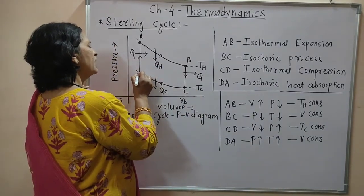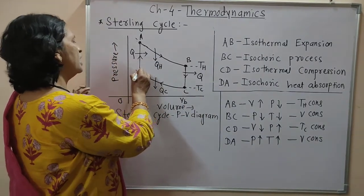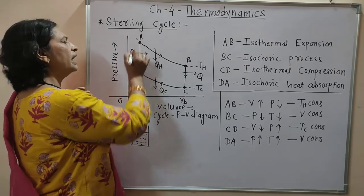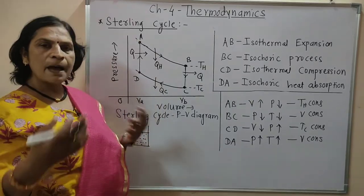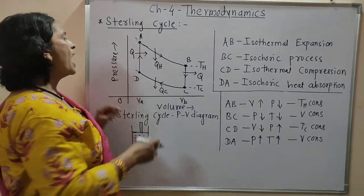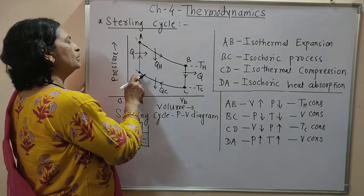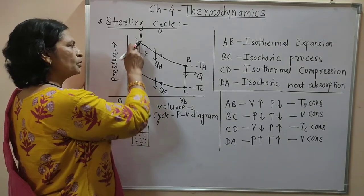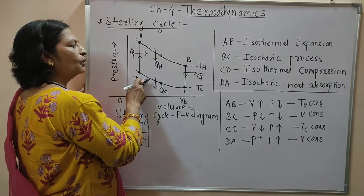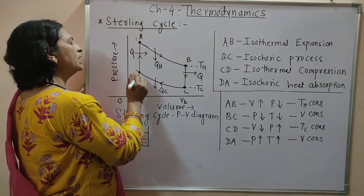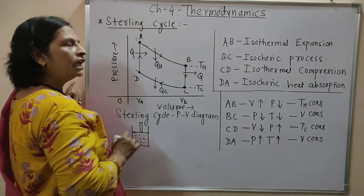The working substance is now at point D. During path DA, heat is absorbed again at constant volume, and due to this heat absorption the temperature goes on increasing from TC to TH.